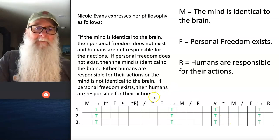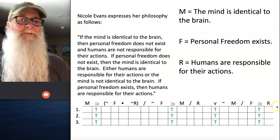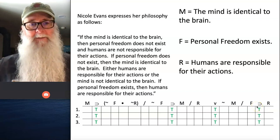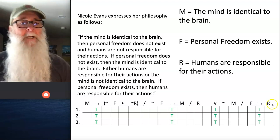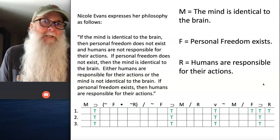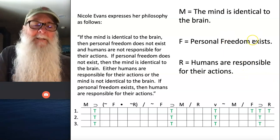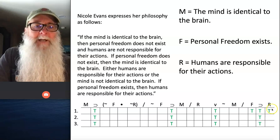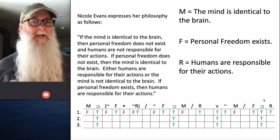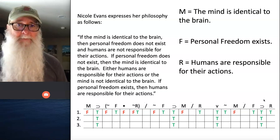We're going to throw a dart at one of these statements. I chose to work with F horseshoe R, assuming both sides of the horseshoe are true — that personal freedom exists is true, and humans are responsible for their actions is true. When I made that assumption, I was able to deduce all of the other logically necessary truth values without contradiction, thus proving these statements are consistent. It's possible this belief system makes sense.